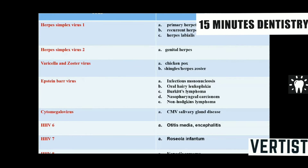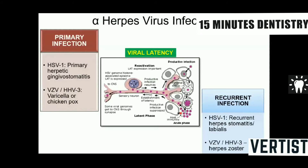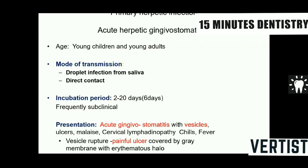The human herpes virus group includes HSV-1, which causes primary gingivostomatitis and recurrent herpetic labialis. It also includes varicella zoster virus and Epstein-Barr virus. The herpes virus is a dermatropic virus with a primary infection followed by latency in nerve ganglia, and reactivation produces recurrent infection — seen in both herpes simplex and herpes zoster infection.